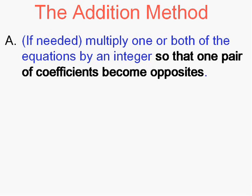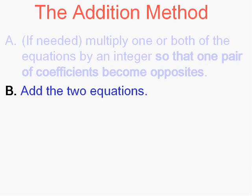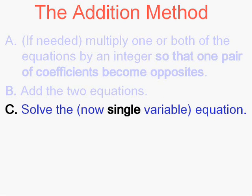Here's the deal with the addition method. We're going to perhaps, sometimes, multiply one or both of the equations by some number in order that a pair of the coefficients will become opposites, the numbers in front of the letters. We want them to be opposites, positive two and negative two kind of a thing, so that when I add the equations, that's the next step, one of them will cancel out. One of the variables will cancel out leaving me with now a single variable equation.